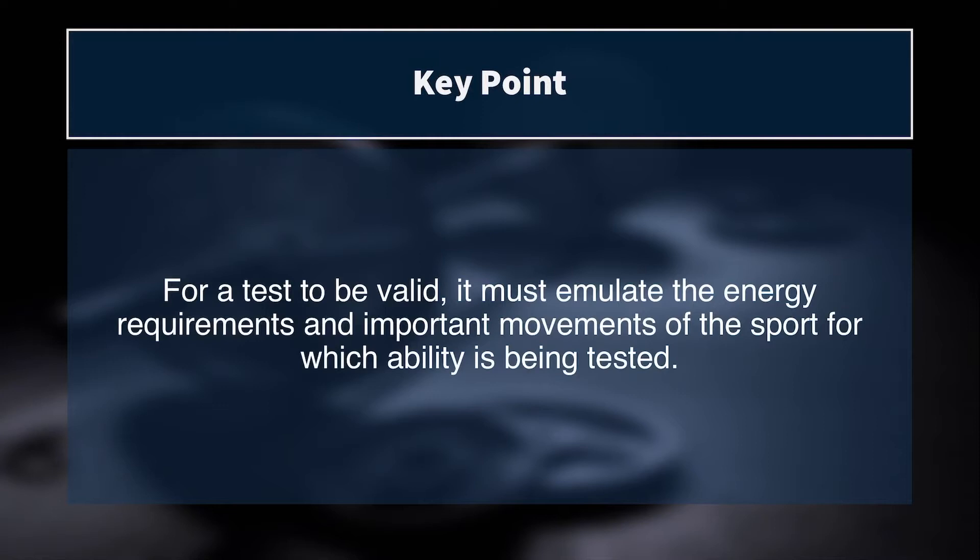You probably wouldn't give the yo-yo level one to a group of volleyball athletes because they don't necessarily need that well-developed aerobic system that soccer players need. In reality, volleyball players do very little straight-line sprinting, so the biomechanical movement pattern specificity is very low for those athletes and we might want to choose a different volleyball-specific test. Similarly, you wouldn't give a 100-meter sprinter a one-mile run test — it's not specific to their event either metabolically or biomechanically. For a test to be valid, it must emulate in some way the energy system requirements and important movements of the sport.